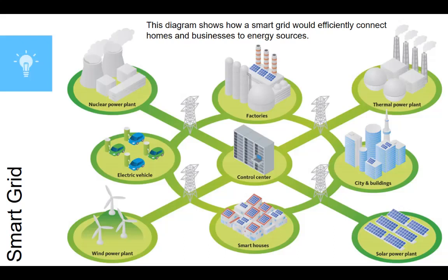Estimates suggest that the smart grid will save the U.S. economy about two trillion dollars during that same period. So while the upfront costs are high, it will actually be paying for itself by the time it's completed. The smart shifting of energy from where it's produced to where it's needed can also prevent power outages, and power outages are not just inconvenient — they're expensive.